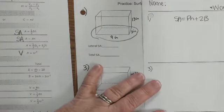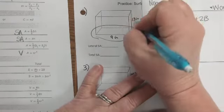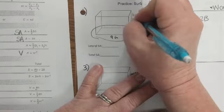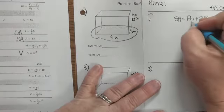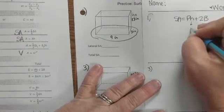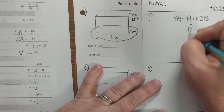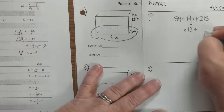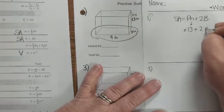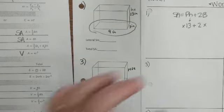All right, step two: I need to circle my base. All right, and I need to designate the... the number that is not circled is the height of my prism. So that is going to go in right here. The height of my prism is 13.